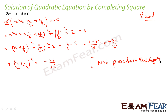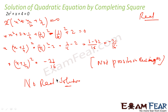A square is negative only in the case of imaginary numbers. Since we are talking about real numbers, and I got x + k² equal to a negative number, that means there is no real solution. There will be imaginary solutions, but no real solution. You will learn the imaginary part in class 11th. For now, since (x + k)² is some negative number, we can say there is no real solution.